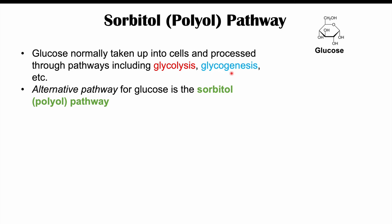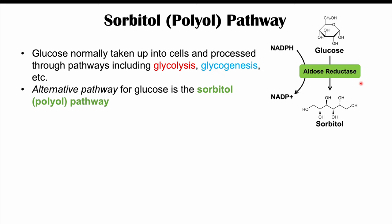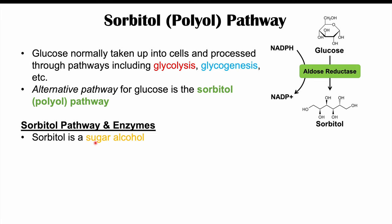The sorbitol pathway begins with the enzyme aldose reductase. Aldose reductase uses NADPH, which becomes oxidized to NADP+, and in doing so, glucose is converted into sorbitol — a sugar alcohol.